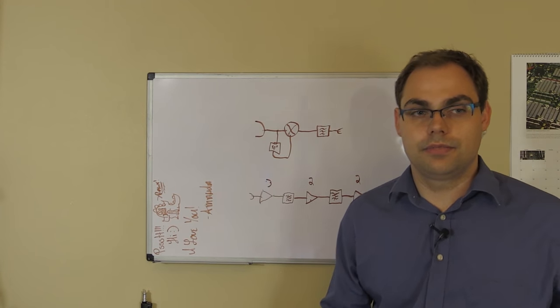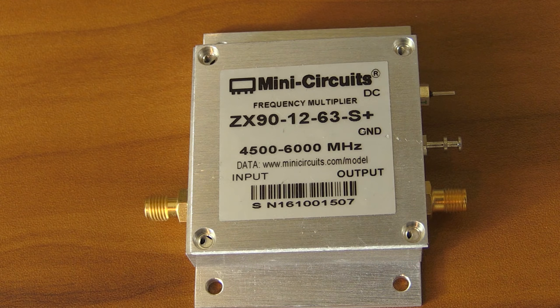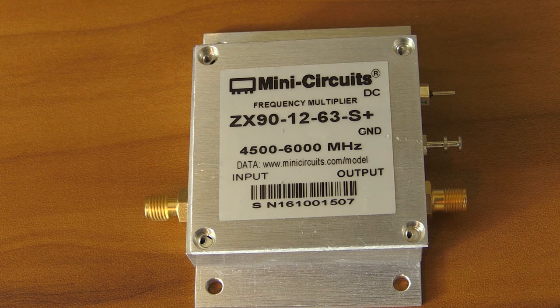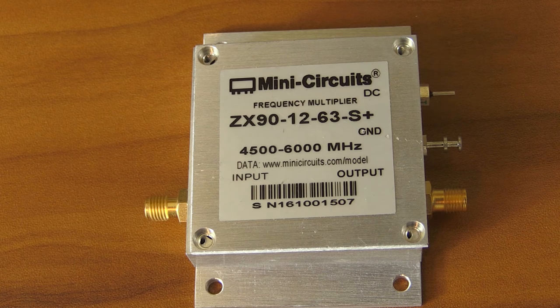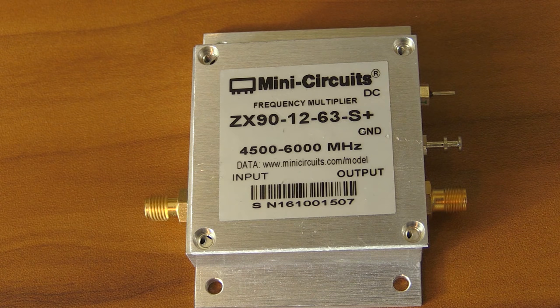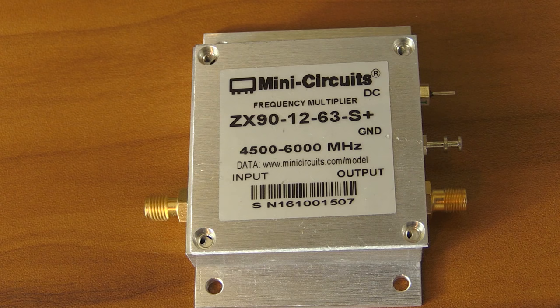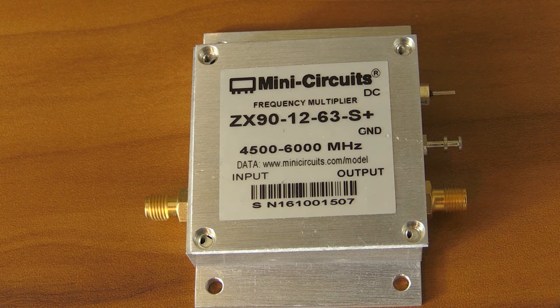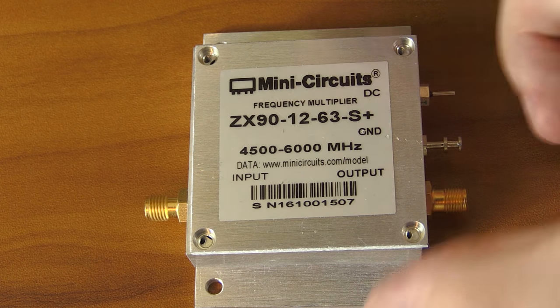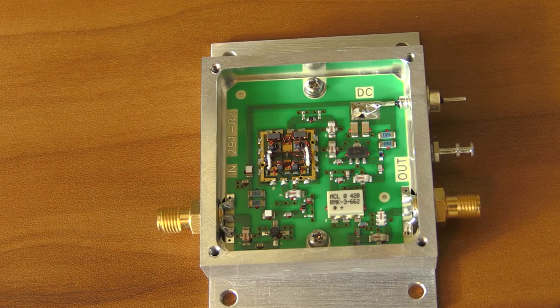Here's the Mini Circuits ZX90-1263. It's a frequency multiplier with an output range of 4.5 GHz to 6 GHz, and it's a times twelve multiplier. That's why I used the times twelve example. I already removed the screws, so let's see inside.